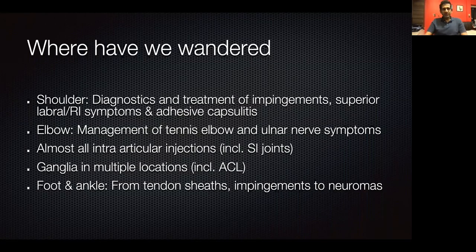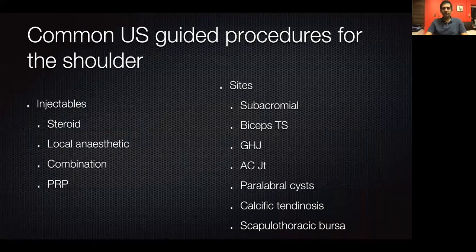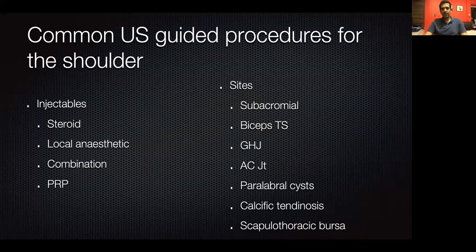Now that you have a sense of what an ultrasound-guided injection involves and basic trajectory changes, let me show some common and more challenging injections. Starting with the shoulder: the most common procedures are subacromial bursal injections, bicep tendon sheath injections, glenohumeral joints, and the AC joint. Other things we work on include paralabral cysts, calcific tendinosis, and the scapulothoracic bursa. Common injectables are steroids, local anesthetic, a combination of both, or in calcific tendinosis cases, normal saline to barbotage and aspirate the calcium.